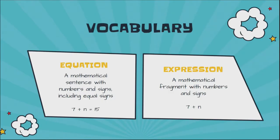An expression is not a sentence. If we talk about grammar, it's not a mathematical sentence — we'll call it a fragment. It does have numbers and signs, but it doesn't equal anything, so we don't put an equal sign in it. They're very similar, but one will have the equal sign and one will not.